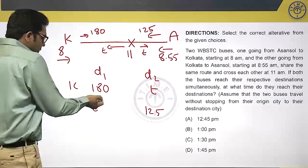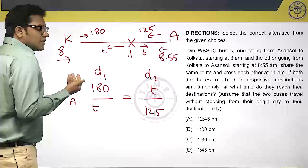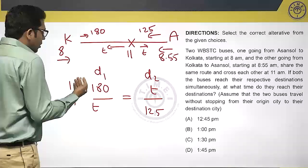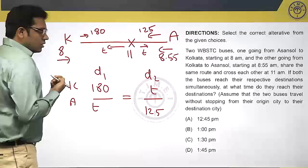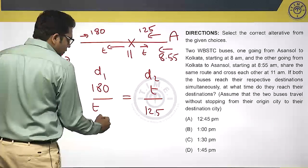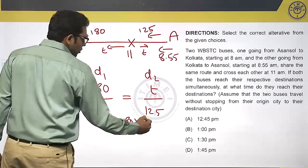We know that they are always proportional. Since distance is directly proportional to time, 180 by T will be equal to T by 125. So, T square equals 180 into 125.